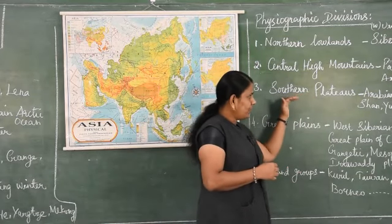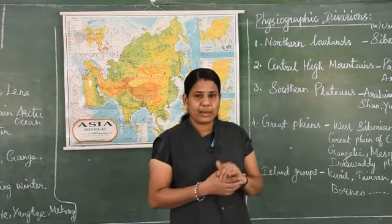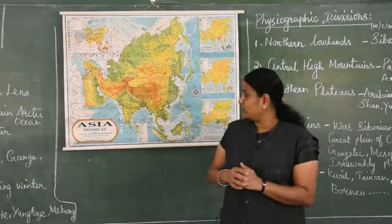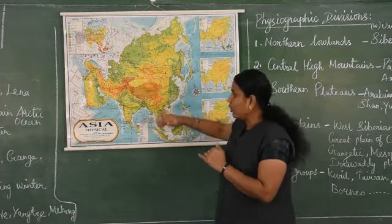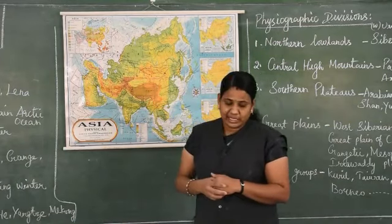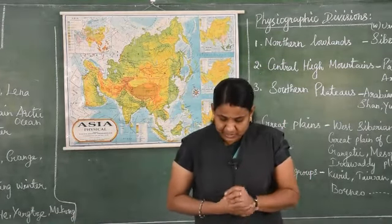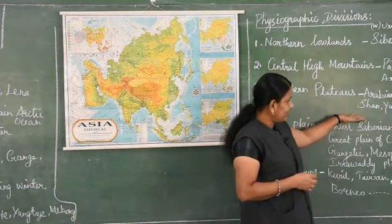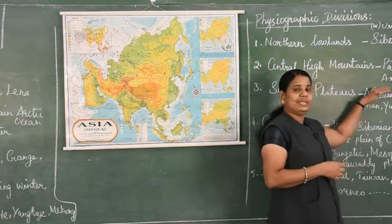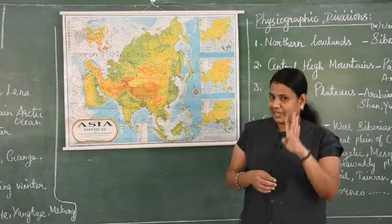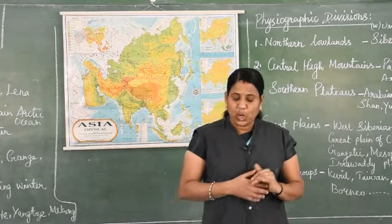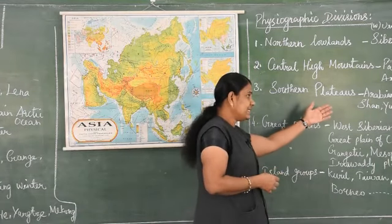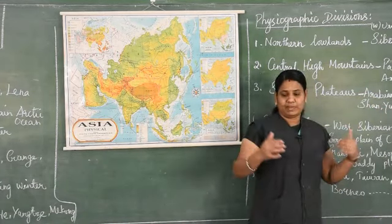Next we are going to see the third one - Southern Plateaus. The Southern Plateaus are relatively lower than the Northern Plateaus. The four important Southern Plateaus are Arabian Plateau, Deccan Plateau, Shan Plateau and Yunnan Plateau. These are the four important plateaus located in Asia. Among these plateaus, the Arabian Plateau is the largest.